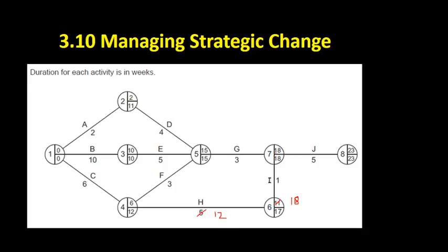That will have an impact on this task here because the earliest start time was 18. Now we've got to wait until activity I gets done. We can't start activity I until week 18. Activity I takes one week. So that's going to make this 19. Plus five equals 24.